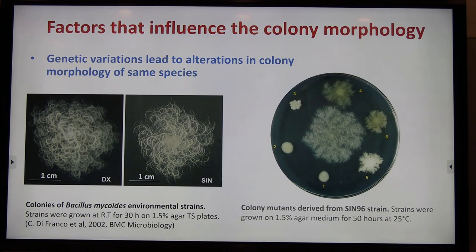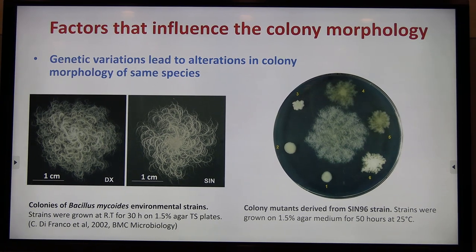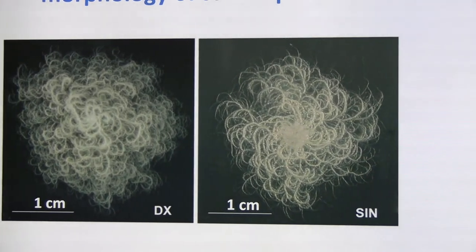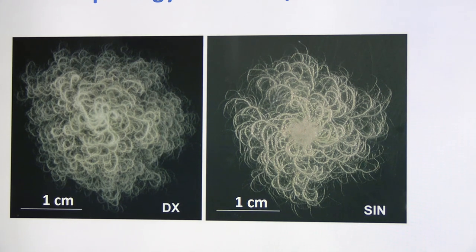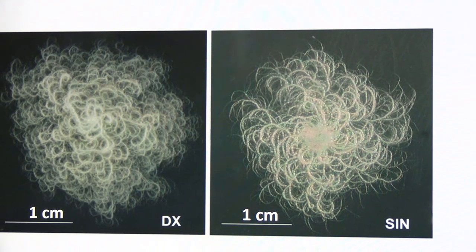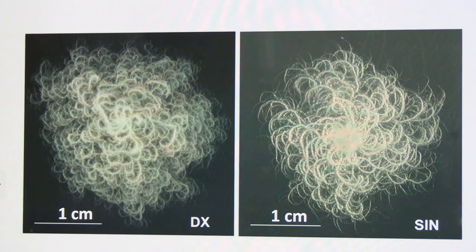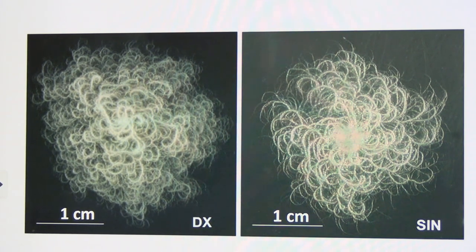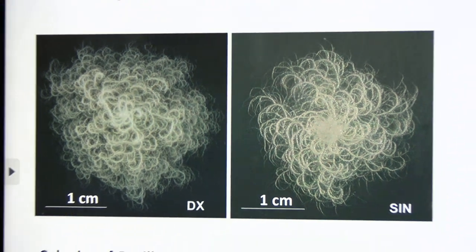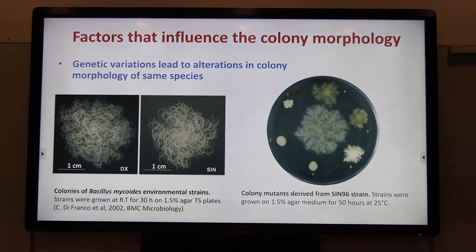Genetic variants also lead to alterations in colony morphology of the same species. For example, this photo shows two strains or sub-strains of the same species isolated from the environment. You can see that the cells in the left colony form something like a clockwise-shaped colony, while the right colony shows a counter-clockwise pattern. So even for the same subspecies, a single mutation in some genes can lead to different morphologies.